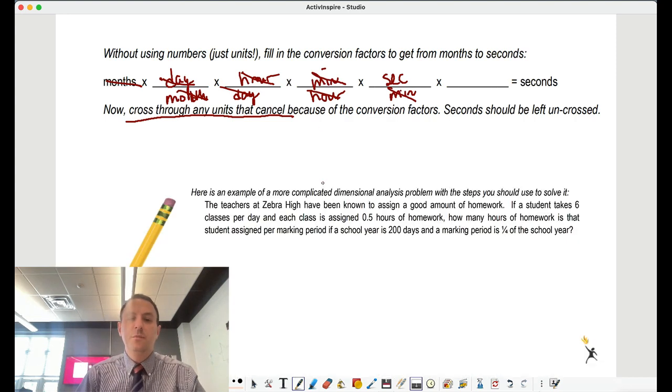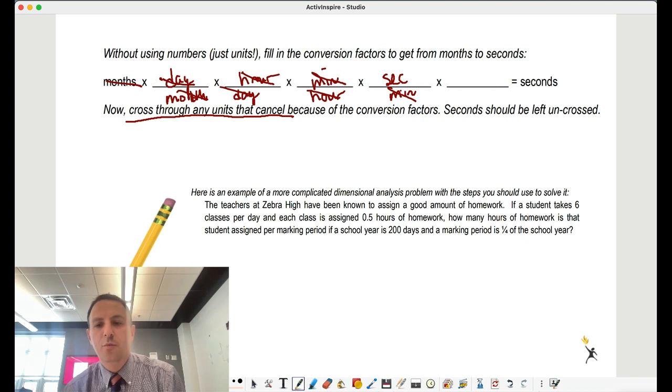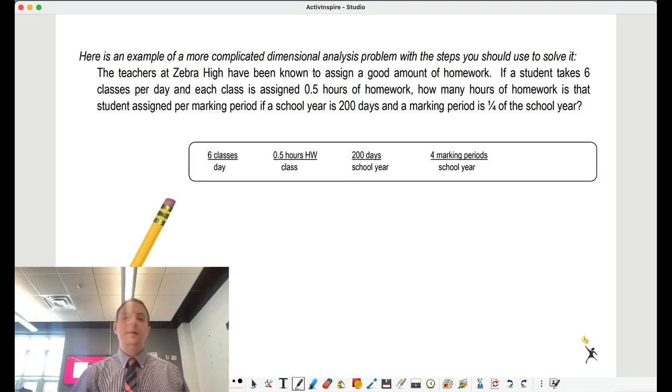So if we look at a more complicated version, and I have more on this on the next page, this is just a more complicated version. The teachers at Zebra High are known to assign homework. If students take six classes per day, each class has a half hour of homework, how many hours of homework is that student assigned per marking period if the school day is 200 days, and each marking period is one-fourth a year? If you look down your page, you'll see it's just another way to look at it.